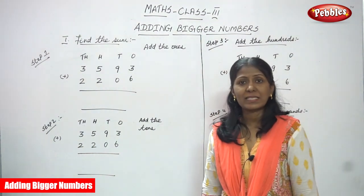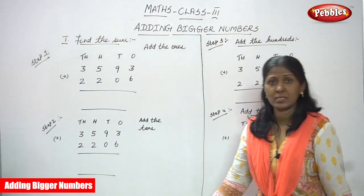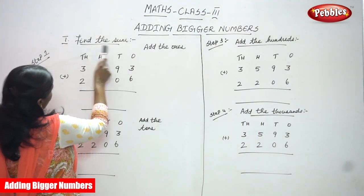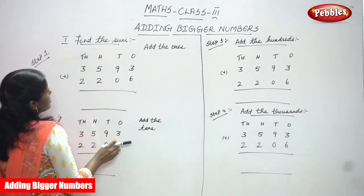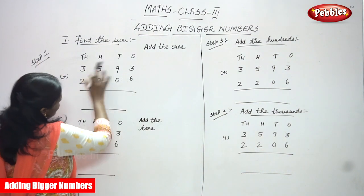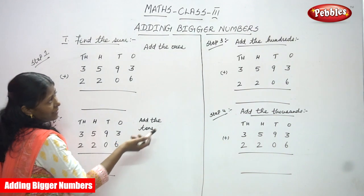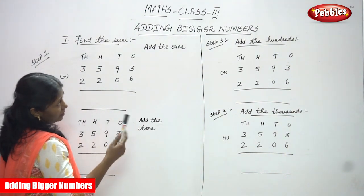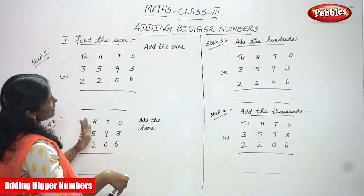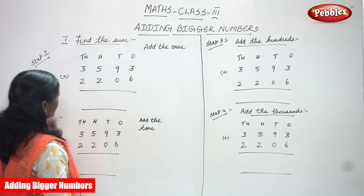Hi, welcome to Pebbles. In today's class we are going to see Math Class 3 - adding bigger numbers. We have to add digit by digit. First we add the ones, next we add the tens, then we add the hundreds, and finally we add the thousands. This is the step-by-step process for adding bigger numbers.